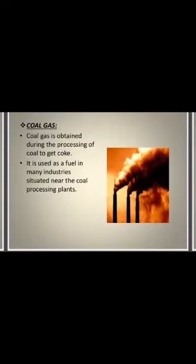The third useful product obtained from coal is coal gas. Coal gas is obtained during the processing of coal to get coke. Coal gas contains carbon monoxide, methane, and hydrogen gas. It is used as a fuel in many industries situated near coal processing plants.